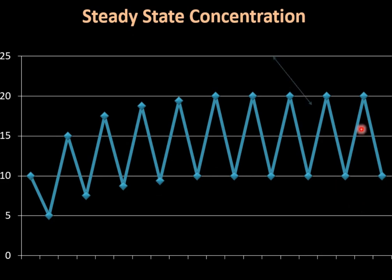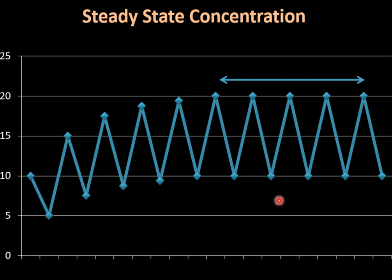This is the point where we achieve steady state concentration. The peak is 20 mg and the trough is 10 mg. When the concentration reaches 10 mg, it means 10 mg remains in systemic circulation and 10 mg has been eliminated. At this half-life level, we administer another 10 mg. Now the drug achieves steady state concentration because drug concentration administered (10 mg) equals drug concentration eliminated (10 mg), and drug concentration remaining in systemic circulation is 10 mg. We have now achieved steady state concentration.